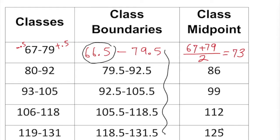For the last class, 119 plus 131 divided by 2 gives 125. And 106 plus 118 divided by 2 gives 112. That is how we find the class midpoint and the class boundaries. Thank you.